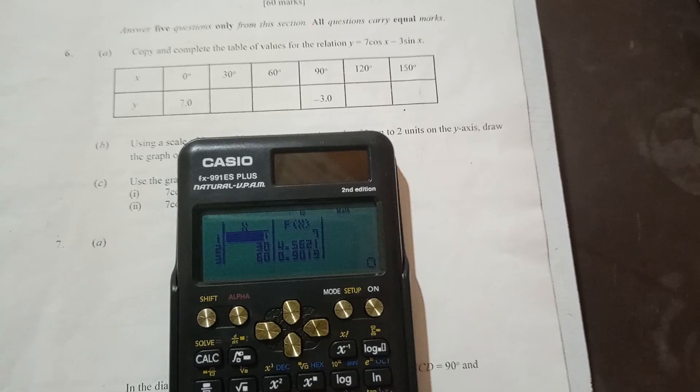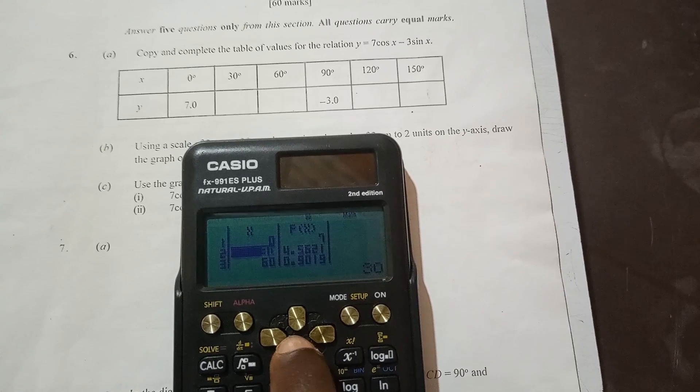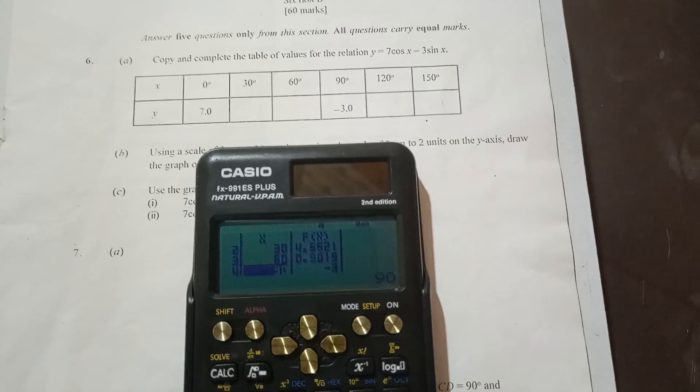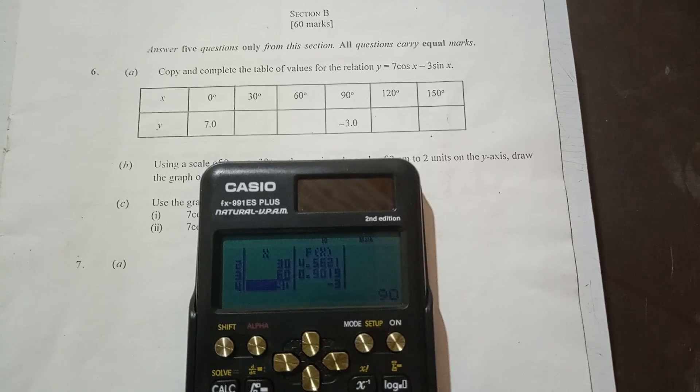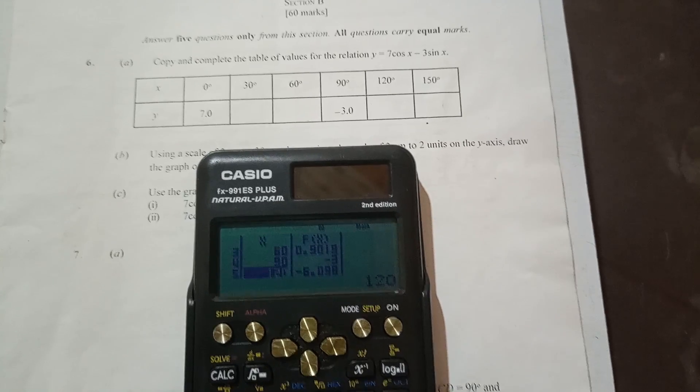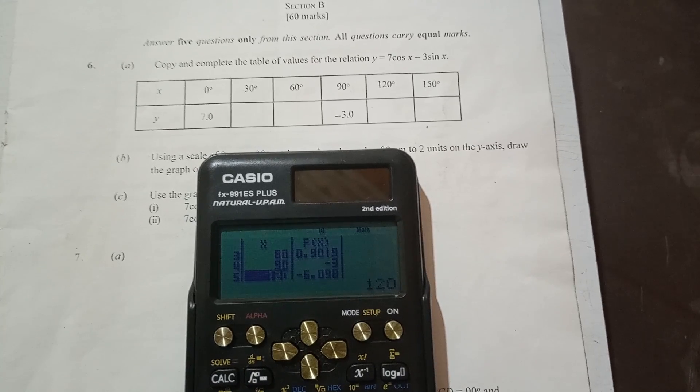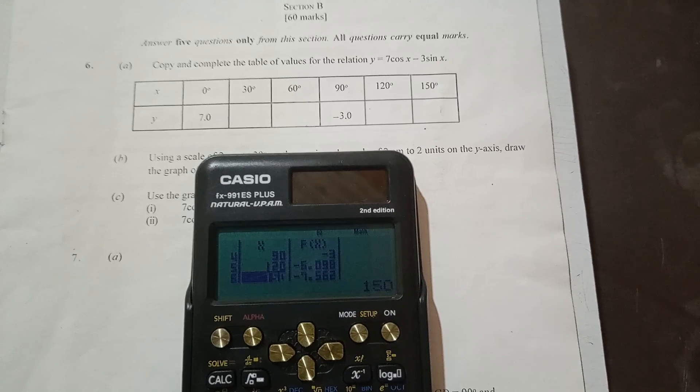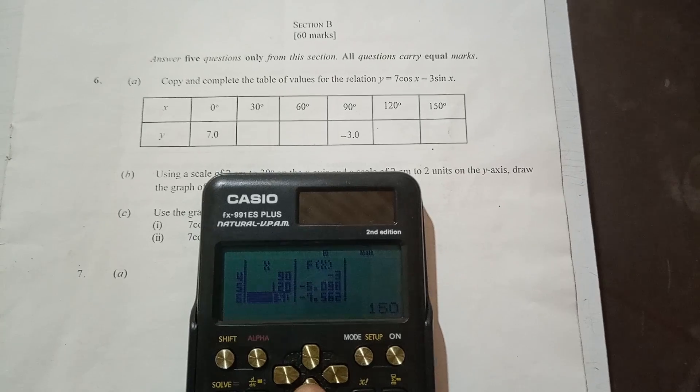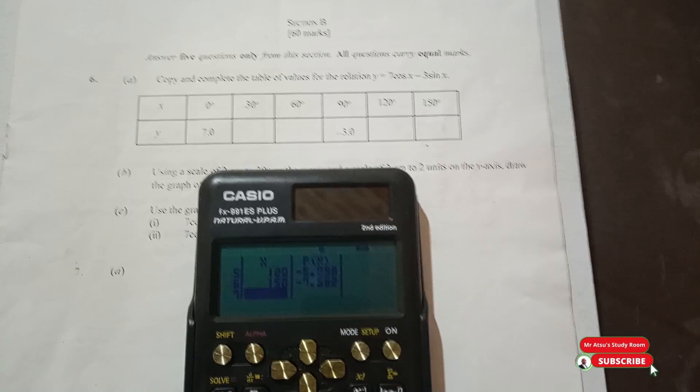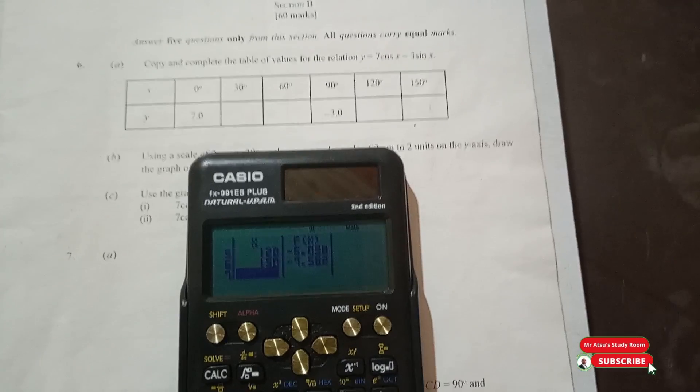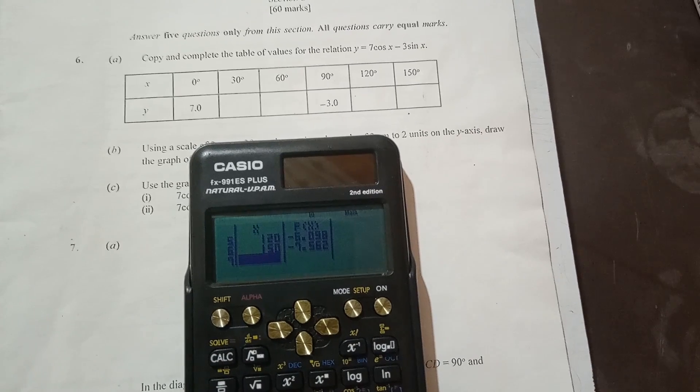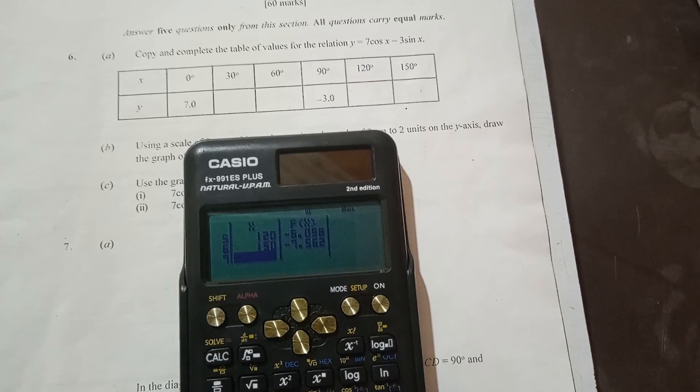For 90, let me just scroll up. So for 90, it's negative 3. That's what you have there. To one decimal place, negative 3.0. Then 120 is negative 6.098, it will be negative 6.1. And then the last one, 150, negative 7.6. So this is how we use the calculator Casio FX-991ES Plus to create a table either for a quadratic function or trigonometric function.